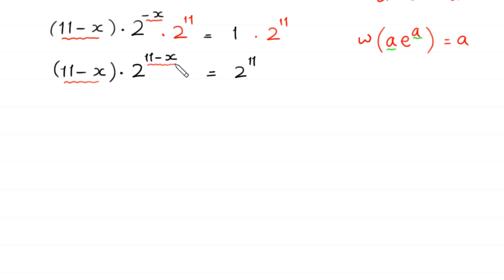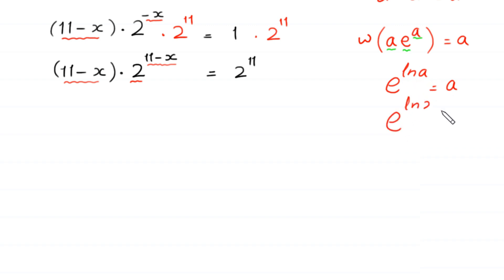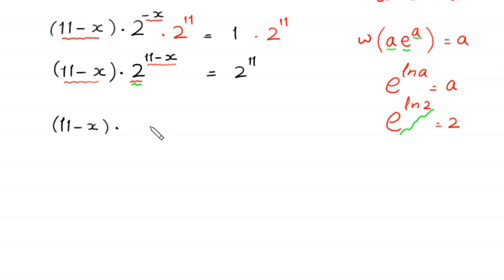But to use the Lambert W function, we must have e in place of these 2s. As you can see in the Lambert W function, we have e here. So to bring e in place of these 2s, we use this natural log property: e to the power ln of a is equal to a. According to this property, e to the power ln of 2 is equal to 2. So we replace this 2 with e to the power ln of 2: 11 minus x times e to the power ln of 2, whole to the power 11 minus x, is equal to 2 to the power 11.